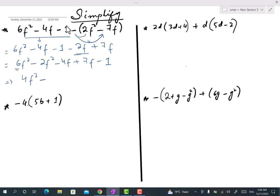Similarly, minus 4 plus 7, the answer is plus 3f. And again, minus 1 remains as it is because there is no number with no variable other than 1.